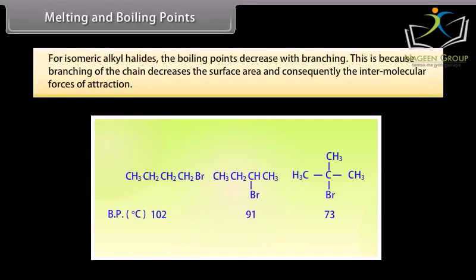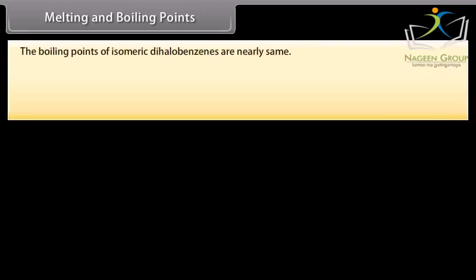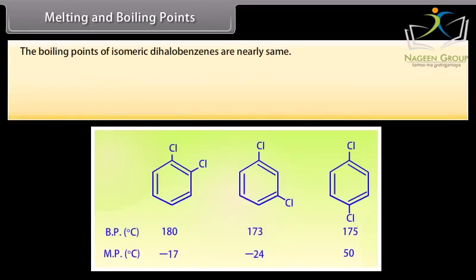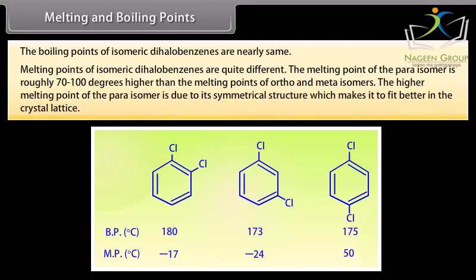For isomeric alkyl halides, the boiling point decreases with branching, because branching of the chain decreases the surface area and consequently the intermolecular forces of attraction. The boiling points of isomeric dihalobenzenes are nearly the same. However, the melting points of isomeric dihalobenzenes are quite different — the melting point of the para-isomer is roughly 70 to 100 degrees higher than those of the ortho- and meta-isomers, due to its symmetrical structure which allows it to fit better in the crystal lattice.